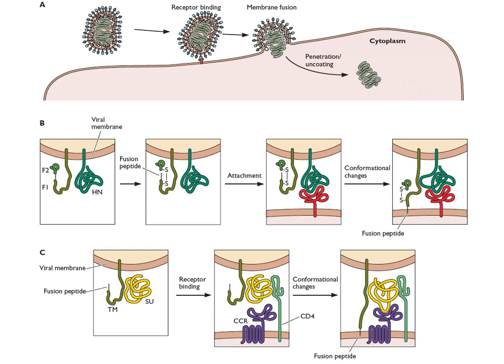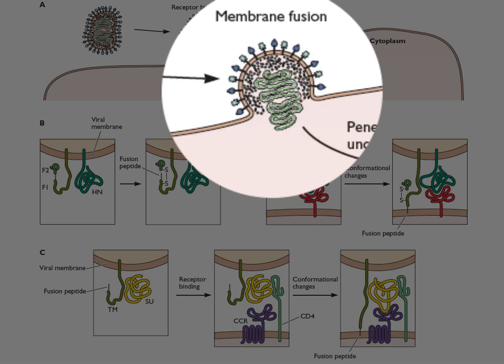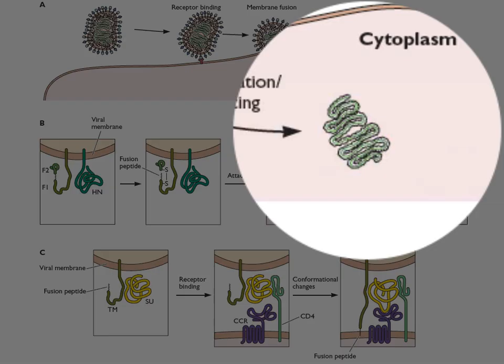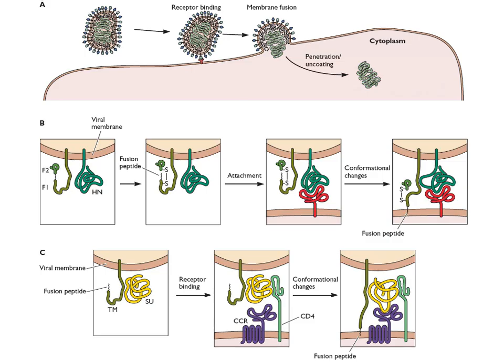Some viruses fuse directly at the plasma membrane, and depending on the virus, that may be all they need to do. Here we have a paramyxovirus — an enveloped, negative-strand RNA virus — fusing at the plasma membrane. It binds a receptor, fusion occurs, and the helical capsid, the RNA-protein complex, is released into the cytoplasm. That's all it needs — it doesn't have to get to the nucleus and can start making messenger RNAs right there.